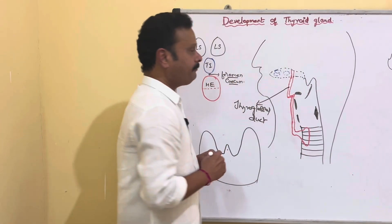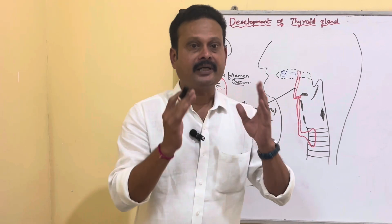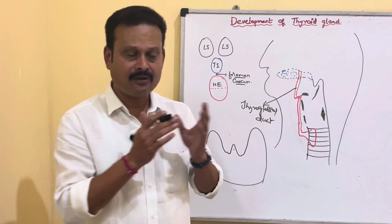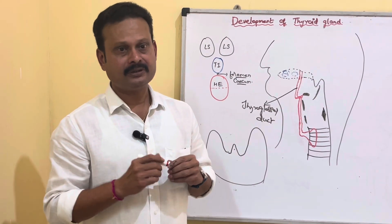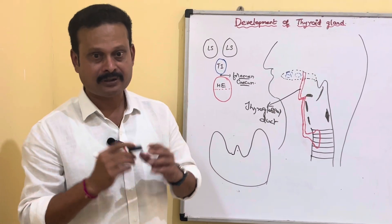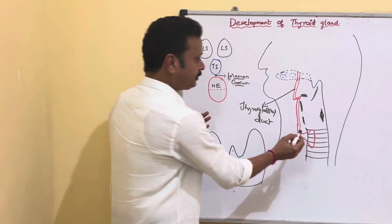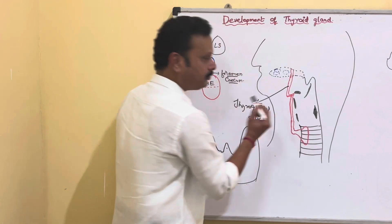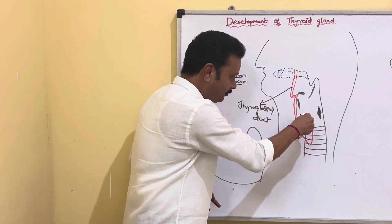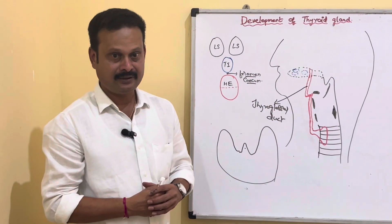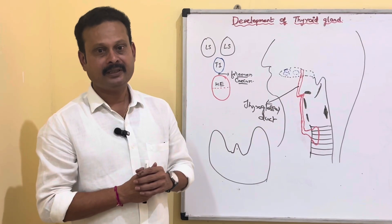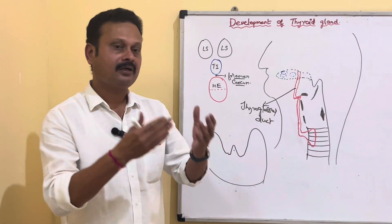The lateral thyroid rudiment of the caudal pharyngeal complex — from the 5th endodermal pouch and rudimentary 6th endodermal pouch — fuses with the lateral lobe of the thyroid gland and arrests the descent of the thyroid lobe further downwards into the thorax. The parafollicular cells of the thyroid gland are developed from the ultimobranchial body of the caudal pharyngeal complex.